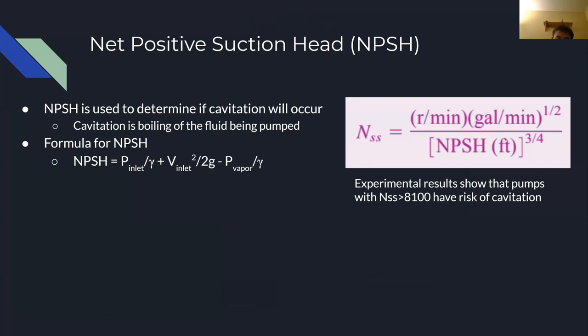Net positive suction head is the effective fluid height above the inlet of a centrifugal pump required to prevent cavitation. Cavitation is the process by which the fluid being pumped boils inside the pump due to the local pressure falling below the vapor pressure of the fluid.